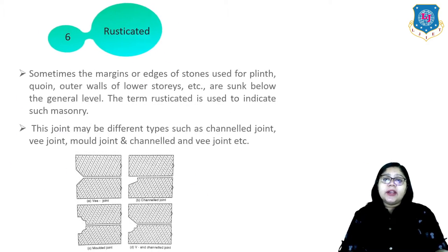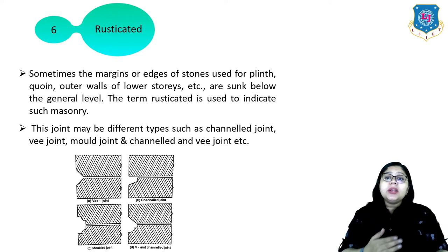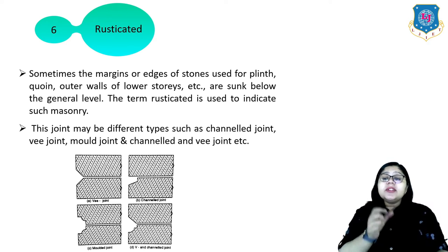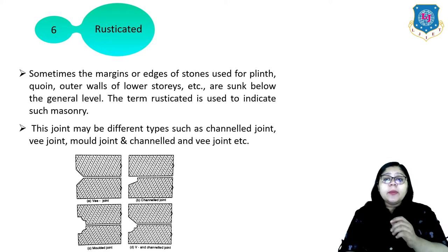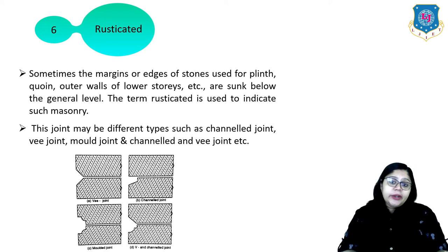The sixth type is the rusticated joint. Sometimes the margins or edges of stones used for plain outer walls of lower storeys are sunk below the general level; the term rusticated is used to indicate such treatment. This joint may be of different types such as channeled joint, V-joint, mold joint, and channeled or V-joint, and you can see the four combinations in this image.